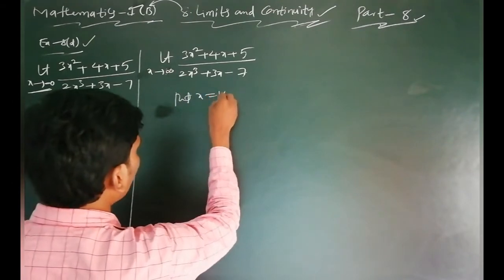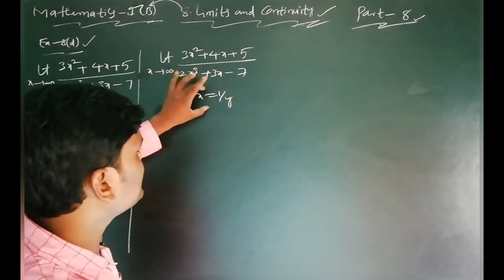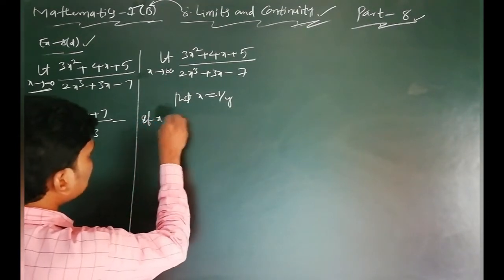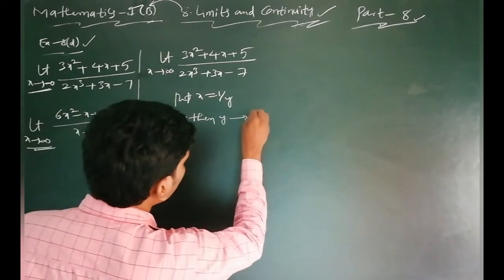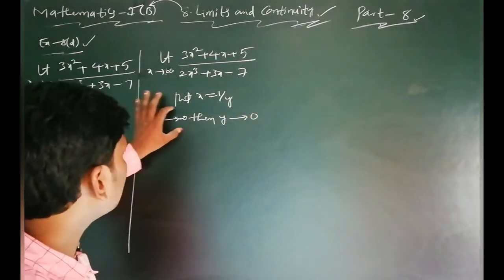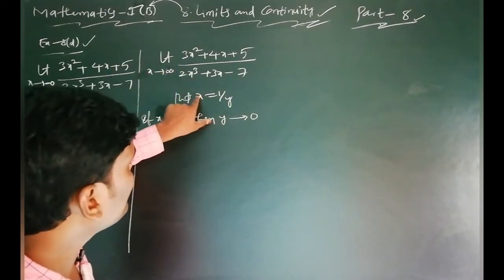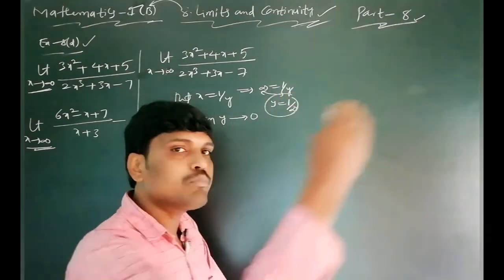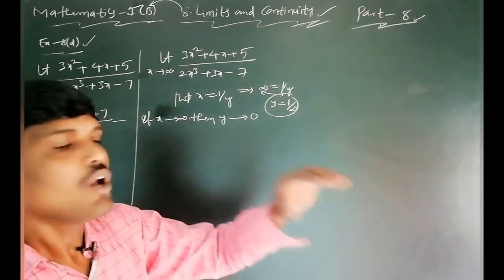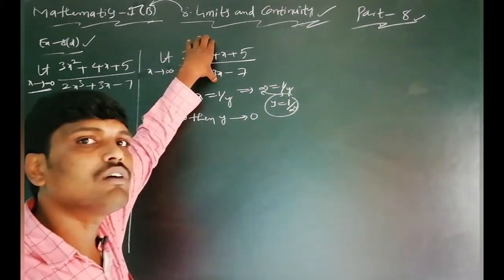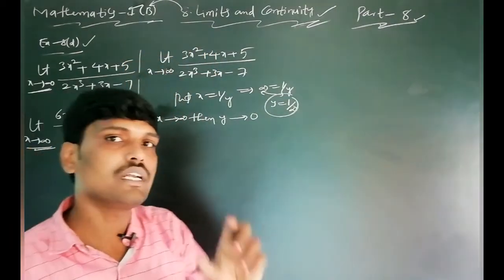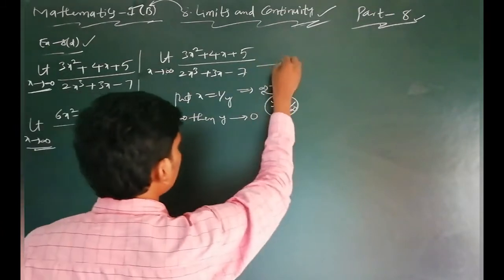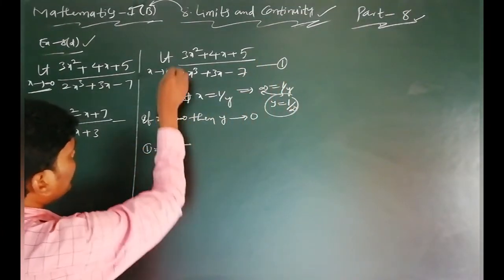To solve the first problem, put x equal to 1/y. If x tends to infinity, then y tends to 0. This is because x = 1/y means infinity = 1/y, so y = 1/infinity = 0. So the function in terms of x gets converted to terms of y, and the limit x tends to infinity becomes y tends to 0.